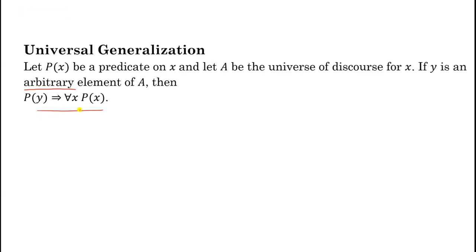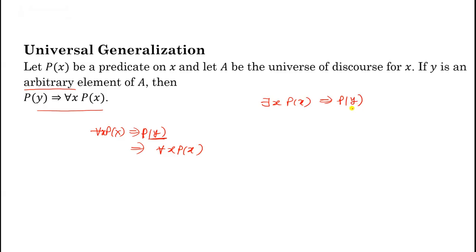If y is not an arbitrary element, you cannot apply Universal Generalization. When we apply Universal Specification — 'for all x, P(x)' tautologically implies P(y) — y is an arbitrary element, so later we can re-generalize back to 'for all x, P(x).' But if we derived P(y) from 'there exists x, P(x),' then y is not arbitrary and Universal Generalization cannot be applied.